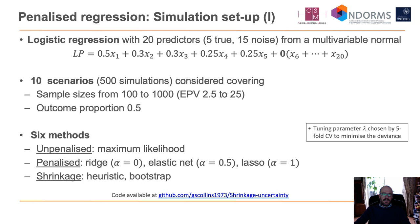Let's look at this in more detail via a small simulation study fitting a logistic regression-based prediction model. We simulate 20 predictors — 5 true predictors and 15 noise — from a multivariate normal distribution. We look at 10 scenarios, each with 500 simulations, covering sample sizes from 100 to 1000 in increments of 100, with an outcome proportion of 0.5. We compare six methods: unpenalised maximum likelihood, penalised methods including ridge, elastic net, and lasso, and the heuristic and bootstrap shrinkage methods. Tuning parameters for penalised methods are chosen by five-fold cross-validation. Code is available on the GitHub page.